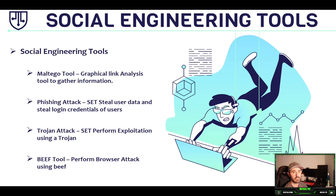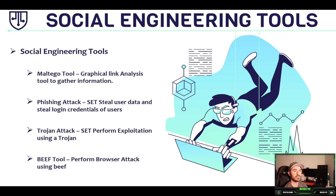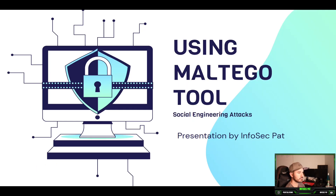You can also have a trojan attack — the SET performs exploitation using a trojan. You can create a reverse shell or a trojan to send to a victim, and once they click on the executable it can give you access to that machine and compromise it. This is useful if you're doing an internal pen test to see if antivirus detects it or to test that systems aren't vulnerable to these exploits. The BeEF tool performs browser-based attacks and is another way to use social engineering.